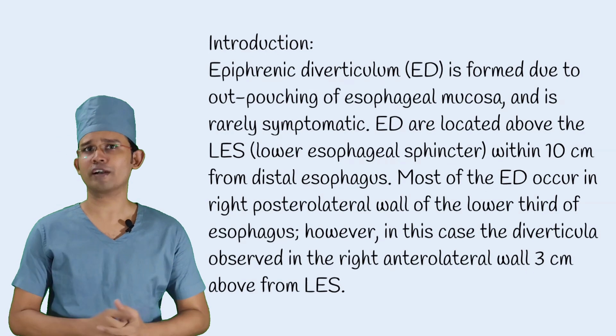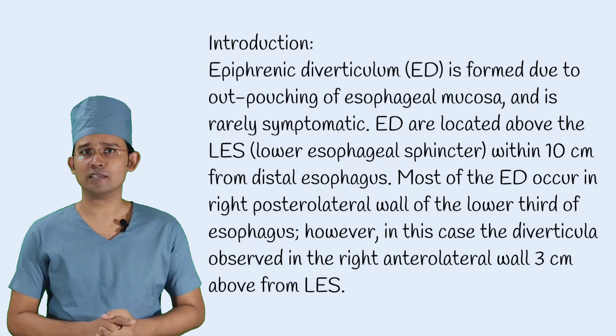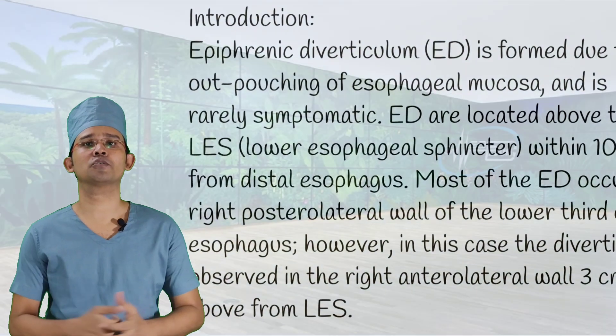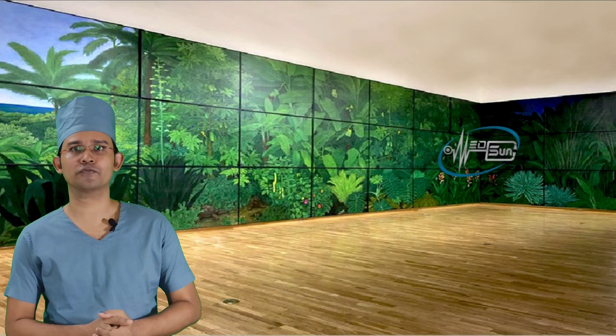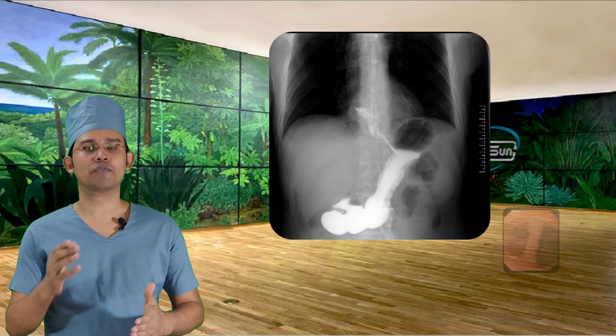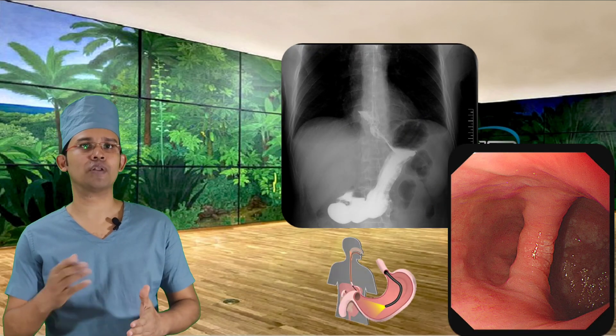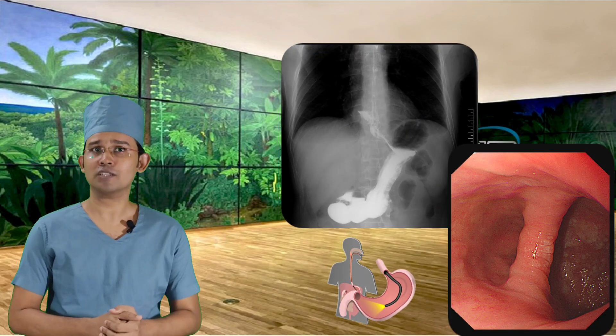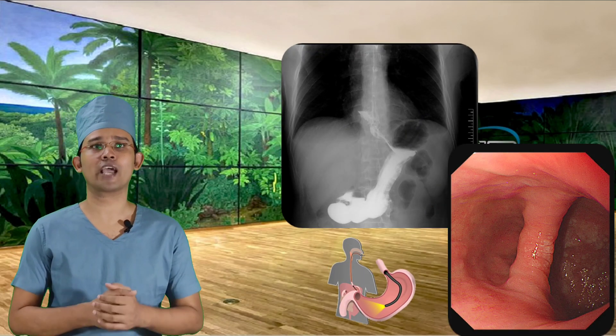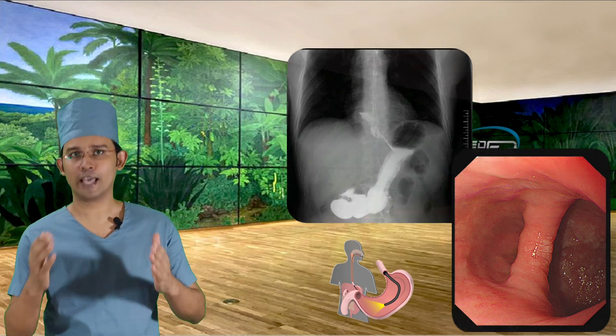However, in this case, the diverticulum was observed in the right anterolateral wall, 3 cm above the LES.